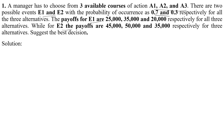We have different payoffs given for E1 and E2. Now we have to construct a decision tree and through that find the expected monetary value to determine which is the best decision — where the manager should choose. Follow the solution diagram to see how the decision tree would be done.